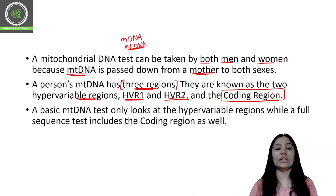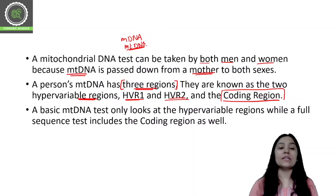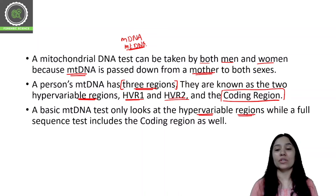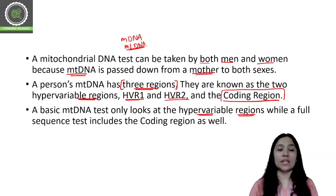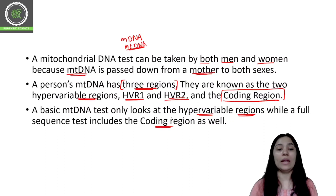Basic mitochondrial DNA testing looks only at the hypervariable regions, while a full sequence test includes the coding region as well. If we do basic mitochondrial DNA testing, we focus only on the hypervariable regions, but for a complete sequence test, the coding region must also be included.